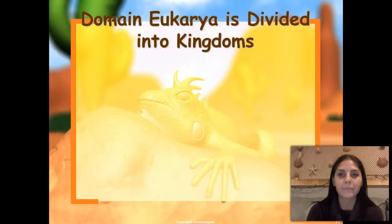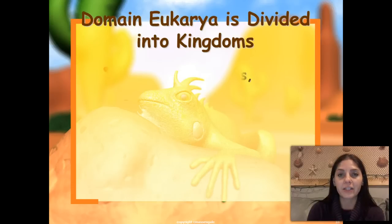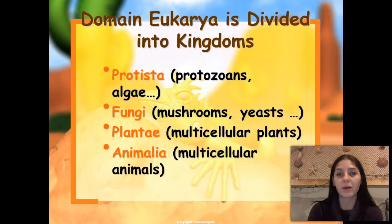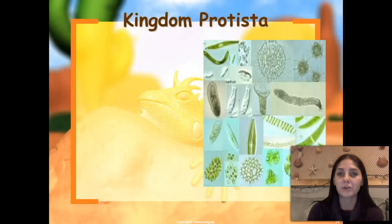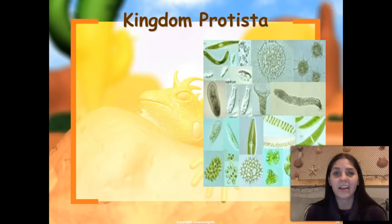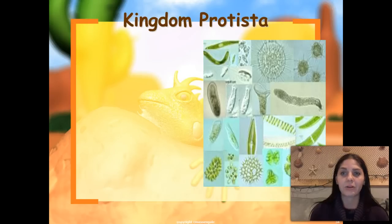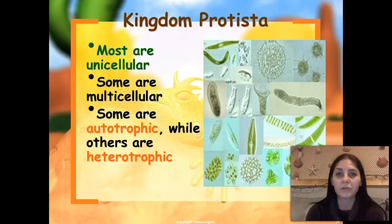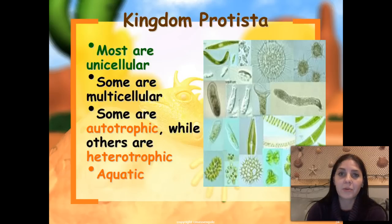The next domain is domain Eukarya, divided into various kingdoms: kingdom Protista, kingdom Fungi, kingdom Plantae, and kingdom Animalia. Kingdom Protista is kind of like the junk drawer that taxonomists put everything into that they don't really know where it belongs — we have plant-like protists, animal-like protists, and fungi-like protists. Most are unicellular, but some are multicellular; some are autotrophic and others are heterotrophic; some are aquatic and some live on land.